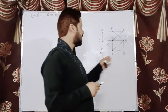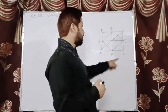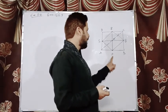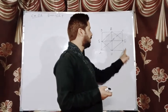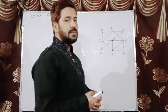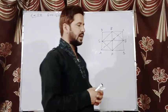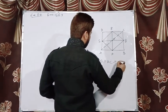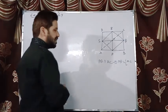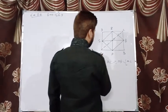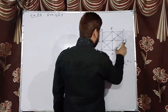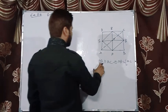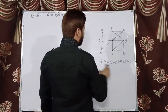We will consider triangle ABC. In triangle ABC, P is the midpoint of side AB and Q is the midpoint of side BC. So PQ is a line segment connecting the midpoints of two sides of triangle ABC. Therefore by the Midpoint Theorem, PQ will be parallel to AC — equation 1 — and PQ will be half of AC — equation 2.